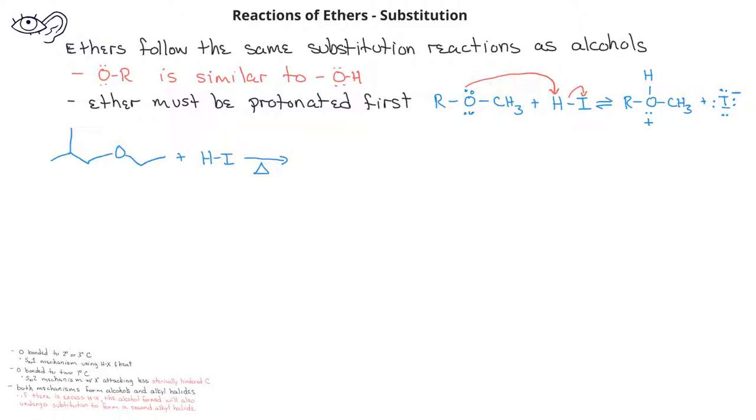In this first example, we have an ether in which the oxygen is bonded to two primary carbons. Once the oxygen in the ether is protonated, it will follow an SN2 mechanism.